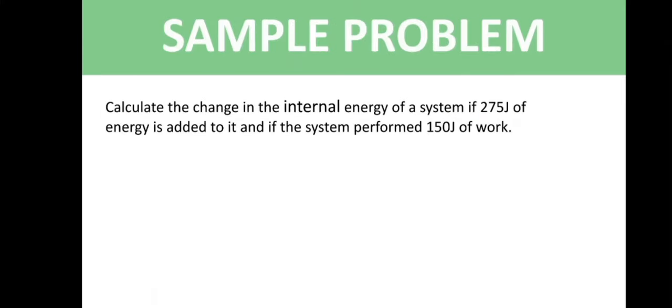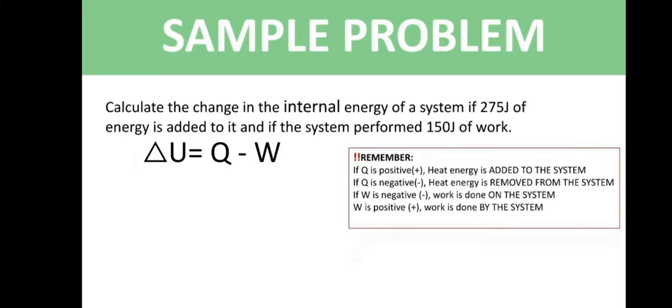Let's do a sample problem. Calculate the change in the internal energy of a system if 275 joules of energy is added to it and the system performed 150 joules of work. Using the equation delta U equals Q minus W: if Q is positive, heat energy is added to the system; if Q is negative, heat energy is removed. If W is negative, work is done on the system; if W is positive, work is done by the system.